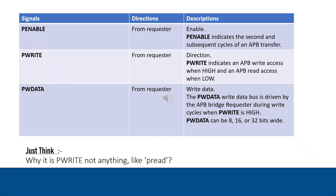The next signal is PWDATA — the write data signal. When PWRITE is high, the PWDATA bus is driven by the APB bridge requester during write cycles. PWDATA can be 8-bit, 16-bit, or 32-bit wide.